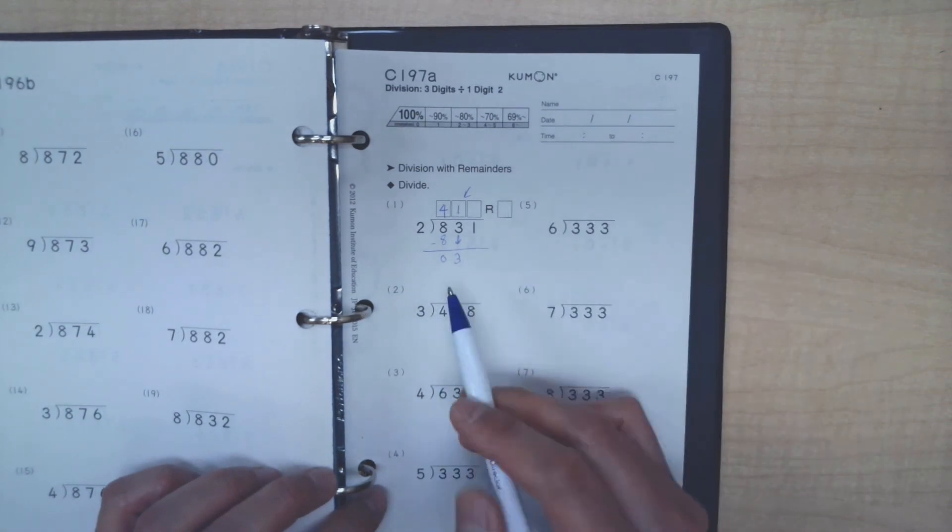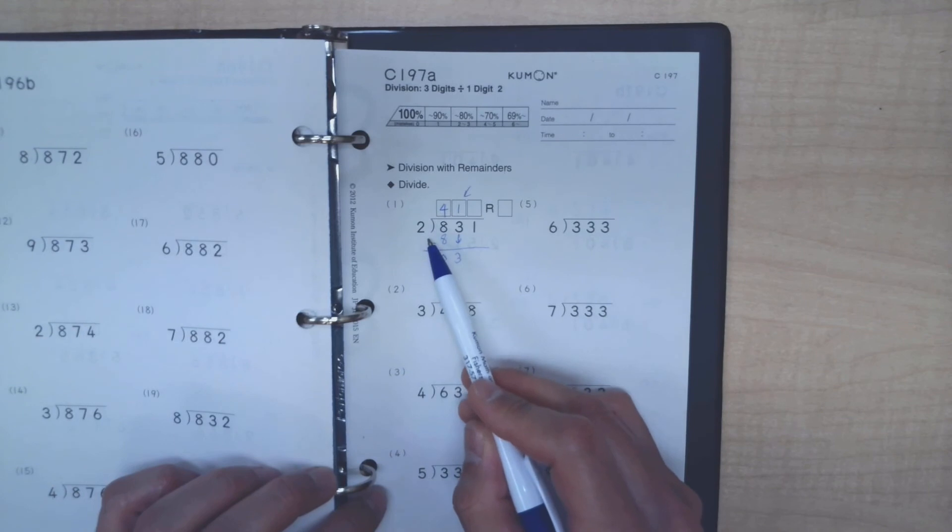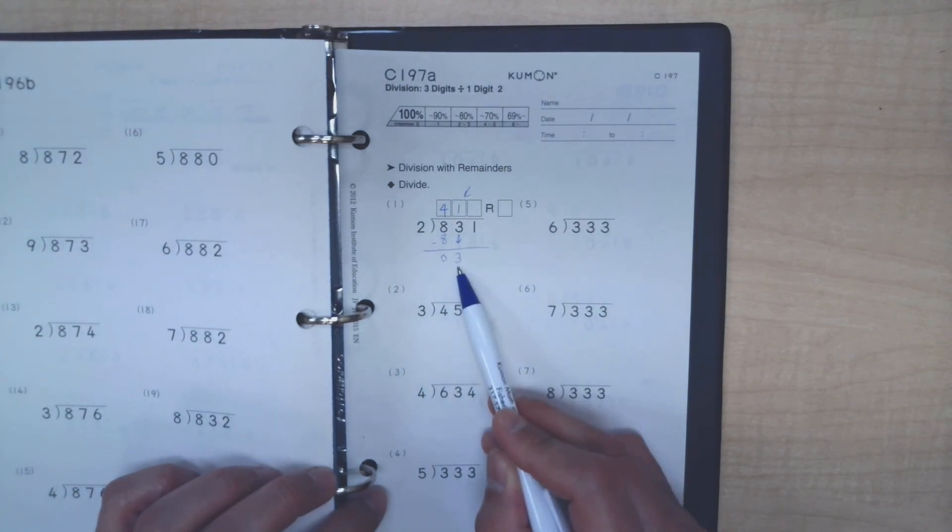How many times can the 2 go into 3 without going over? We know it's 1, because if we were to attempt to put 2 up there, 2 times 2 would equal 4. But remember, the rule is you can either match this number with your multiplications, or if you cannot match it, then you'd have to go up as closely as you can to this number but cannot go over it.